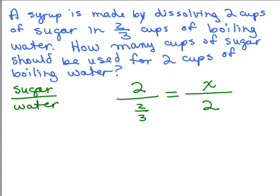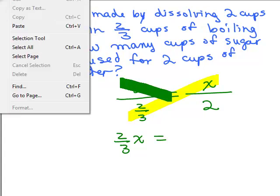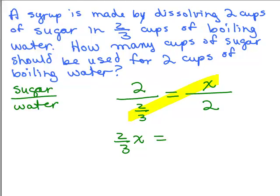That's what your proportion should look like if you did it as sugar over water. If you did water over sugar, the fractions would all be the reciprocals. Now we can do our cross products. So we could do 2 thirds times x equals 2 times 2, which is 4.